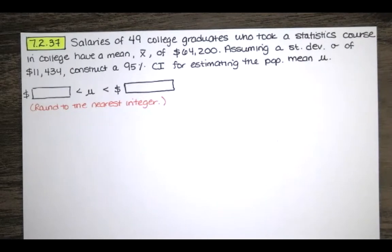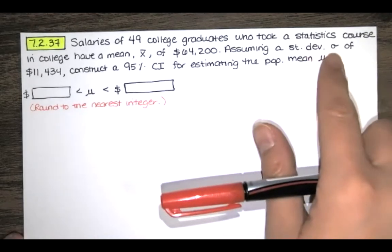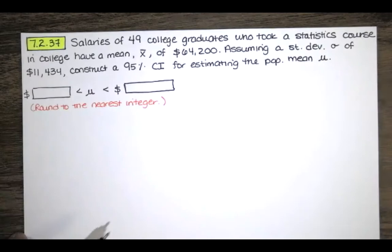Now notice that in this example, we're actually given the population standard deviation. That's very uncommon, but in this example, that's accurate. We're told that the population standard deviation is this amount.